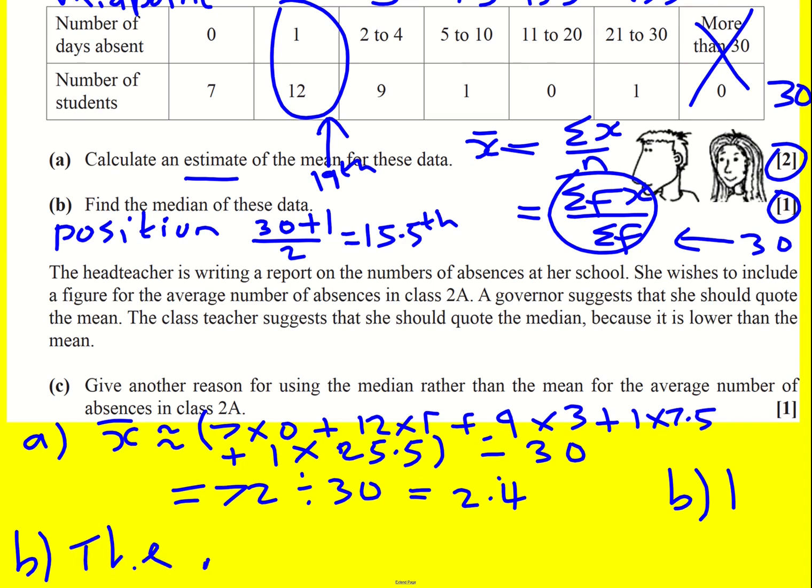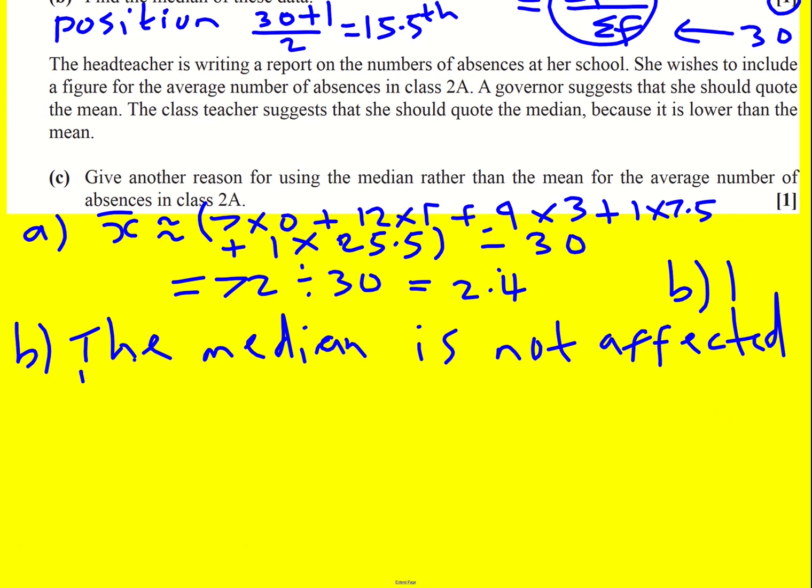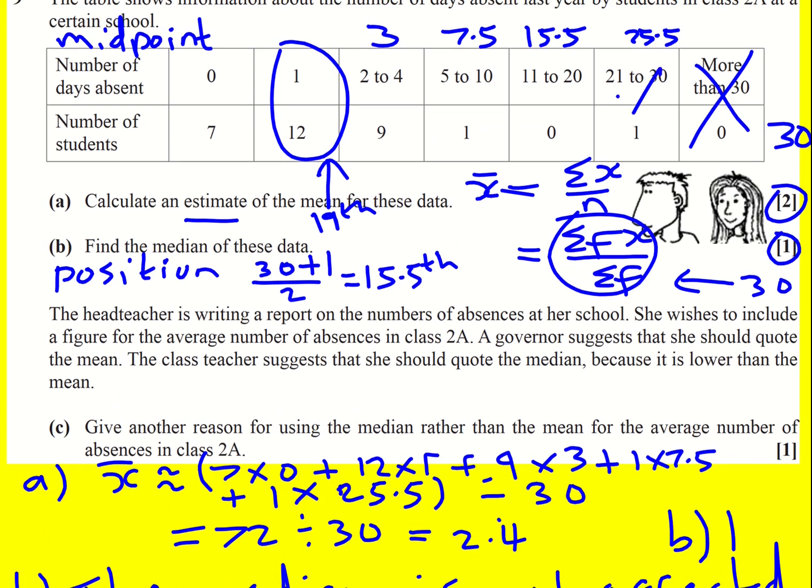So something like the median is not affected, and then instead of extreme values, say it's not affected by the outlier, or words to that effect, in the 21 to 30 class, essentially referencing this value here is what the question is getting at.